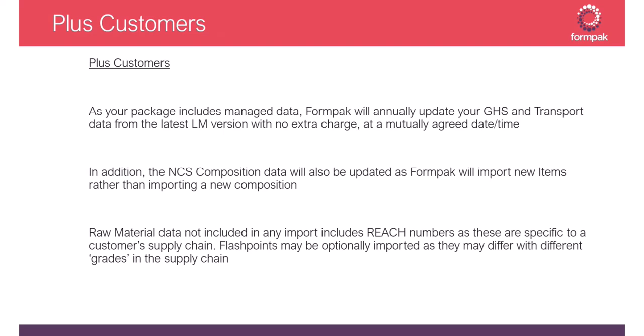Raw material data not included in the labeling manual includes specific concentration limits that aren't mentioned and sometimes need to be added. REACH numbers are specific to a customer's supply chain, so those can only come from your supplier. Flashpoint data may be optionally imported with the automated import process, as the flashpoints listed in the labeling manual may differ from the grade you're actually purchasing.